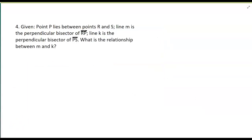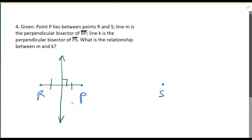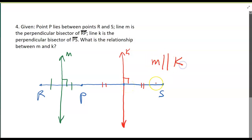Our last example: point P lies between points R and S. Line M is the perpendicular bisector of segment RP, and line K is the perpendicular bisector of PS. What is the relationship between M and K? Since they are both perpendicular to segment RS, that means M is parallel to K — because two lines perpendicular to the same transversal are parallel.